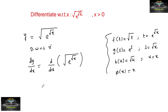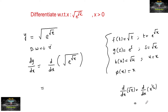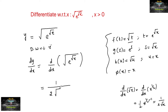So let us apply the chain rule: d by dx. First, differentiation of the root function — we know d/dx of √x = d/dx of x^(1/2) = (1/2)x^(1/2 - 1) = 1/(2√x). So differentiation of √p is 1/(2√p), where p here is e to the power of root x.